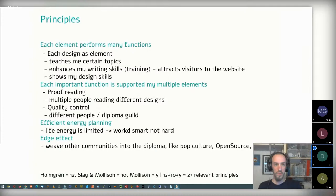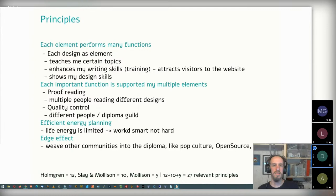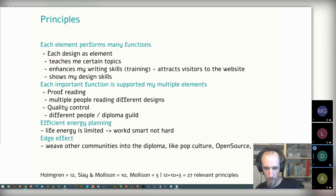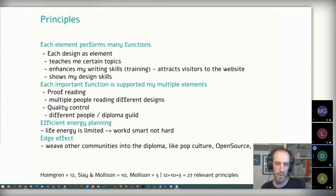Principles are also a bread-and-butter tool in permaculture design. What you see here are four of the ten defined by Slay and Mollison: each element performs many functions; each important function is supported by multiple elements; efficient energy planning; and the edge effect. Food for thought — usually when we see principles we only see Holmgren's twelve. But there are more: Slay and Mollison with ten, and then Mollison with five, giving us 27 relevant principles. So there's more than just Holmgren.